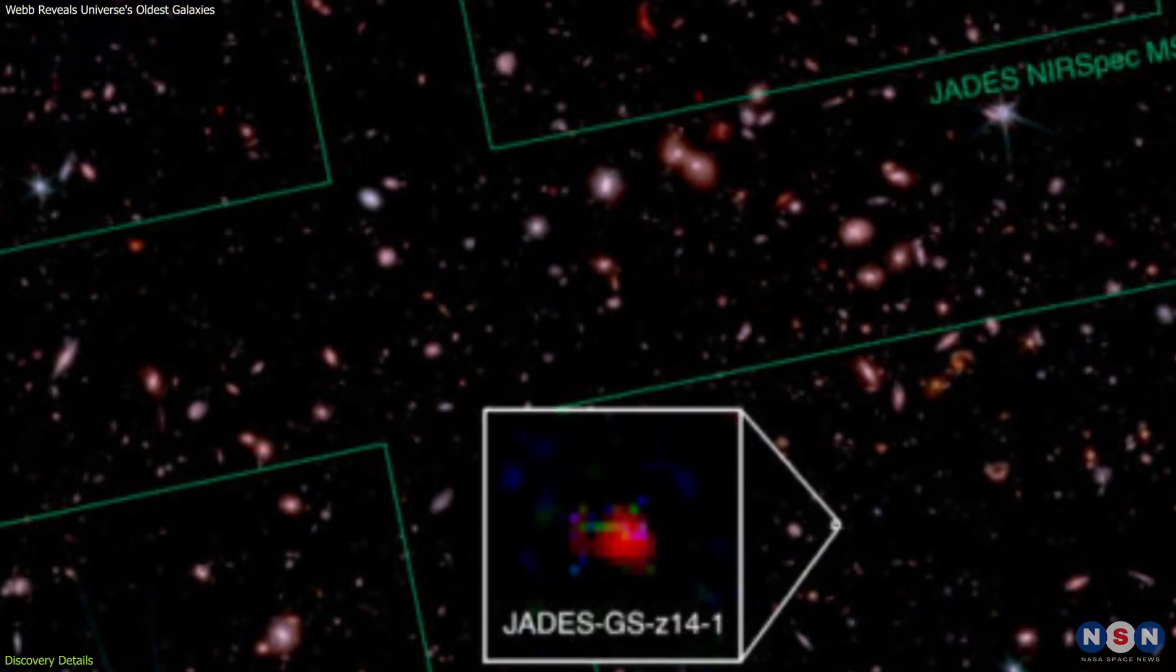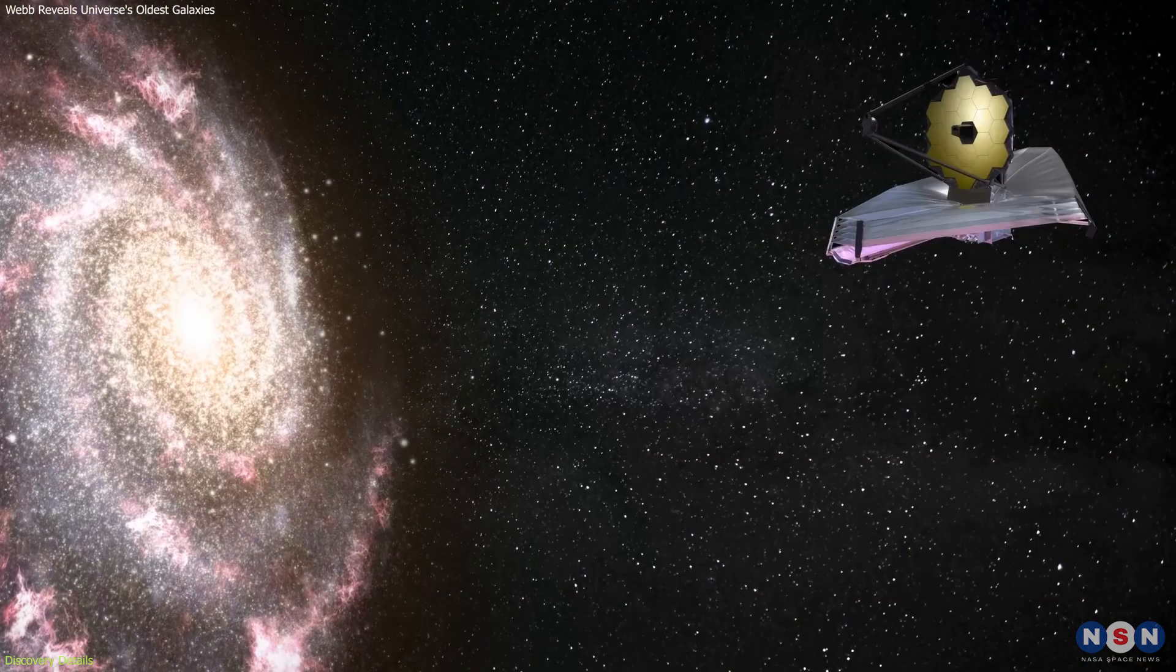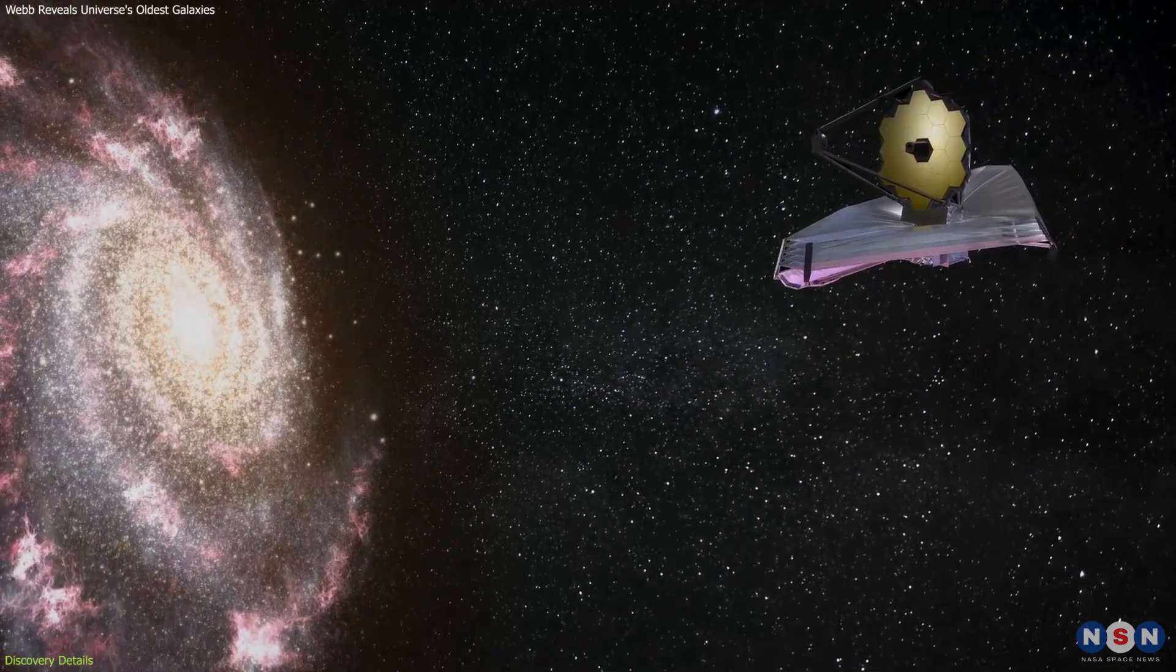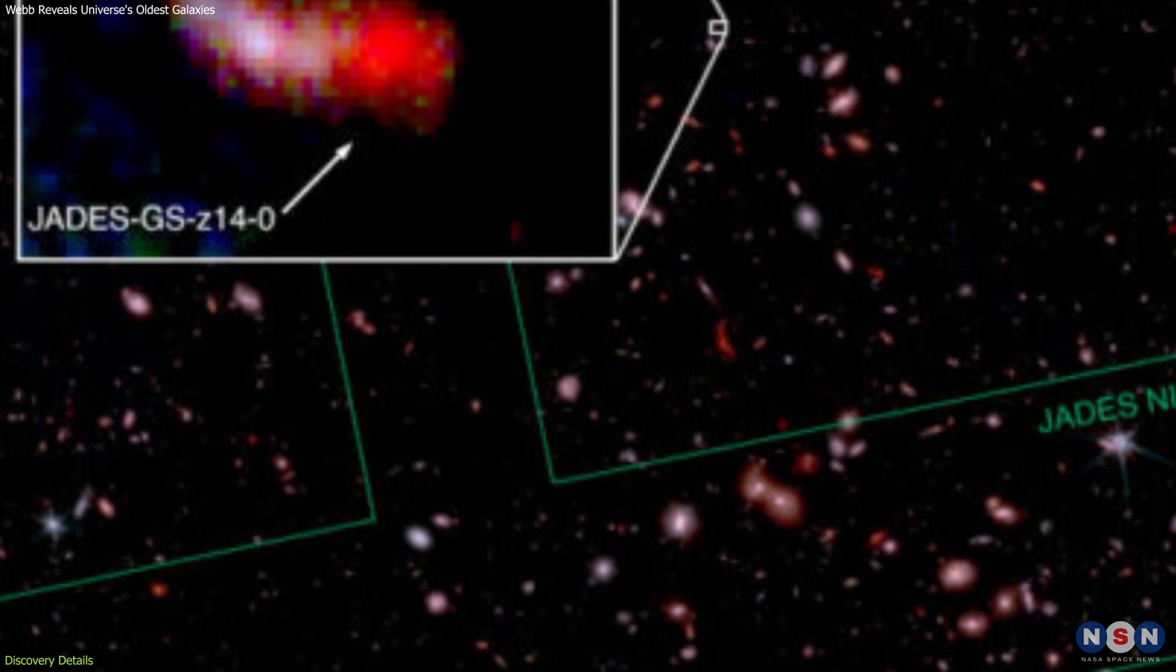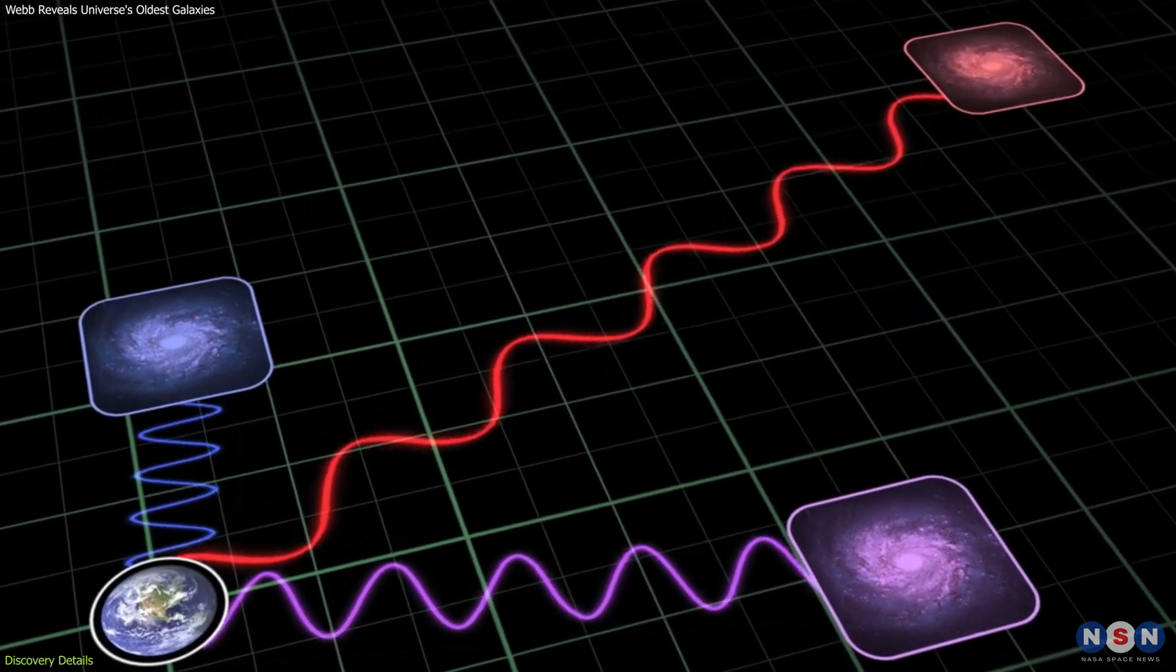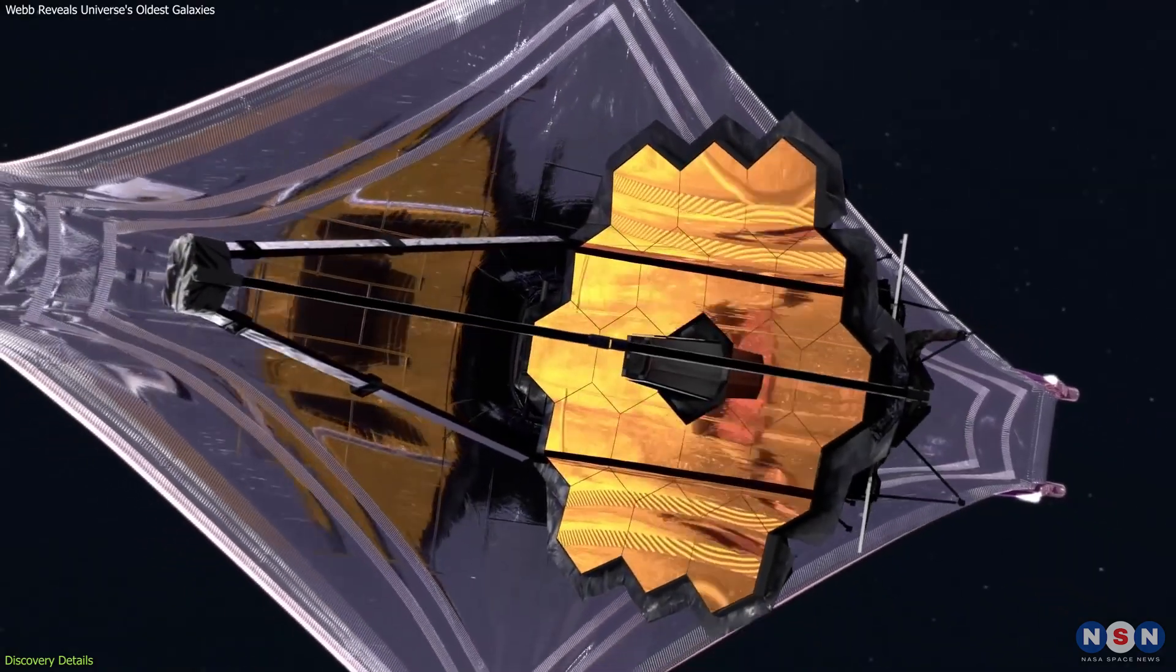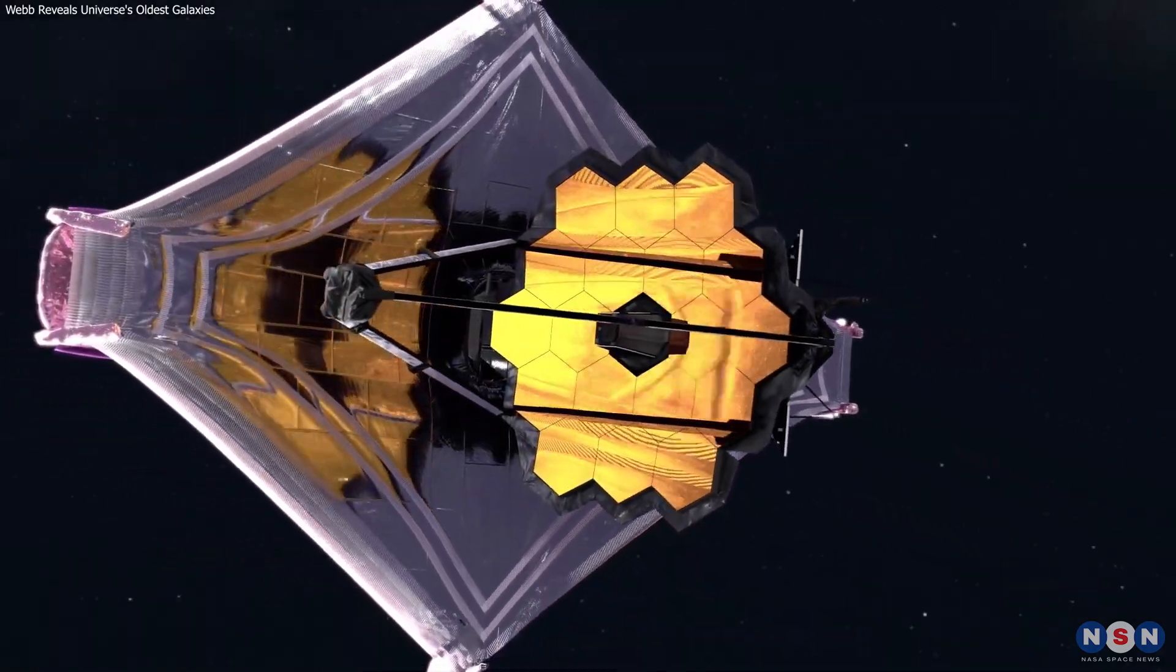The second galaxy, while slightly less distant, still holds the record for being one of the earliest galaxies observed. The ultraviolet light from both galaxies has been stretched to infrared wavelengths by the expanding universe, making them visible only with Webb's advanced capabilities.